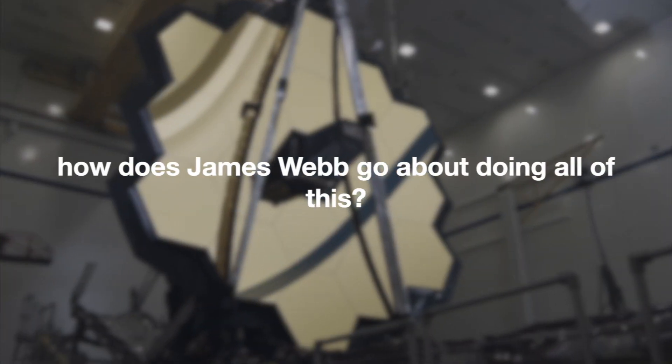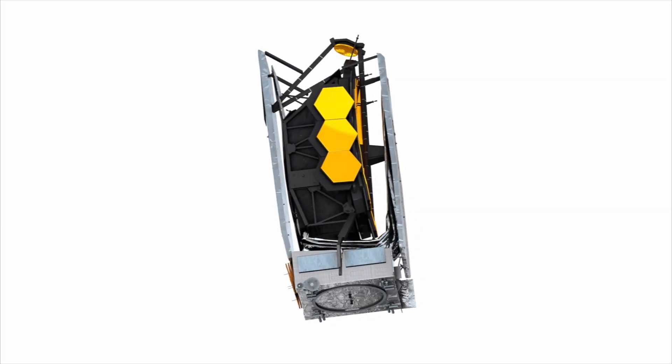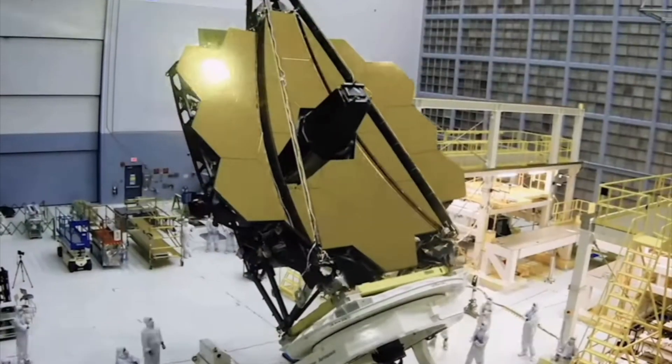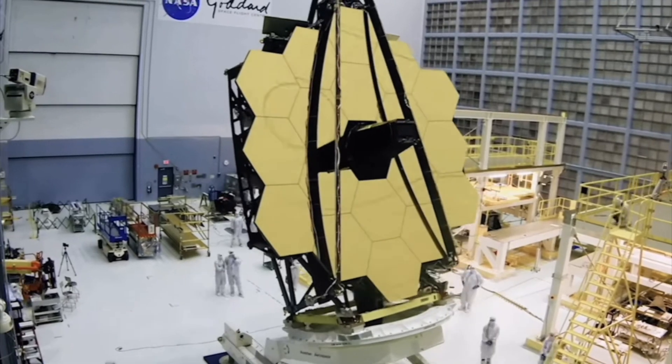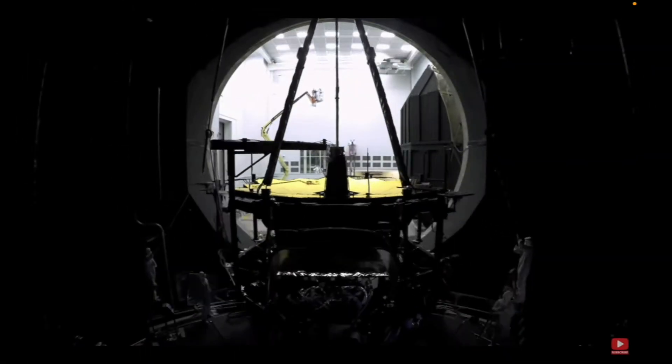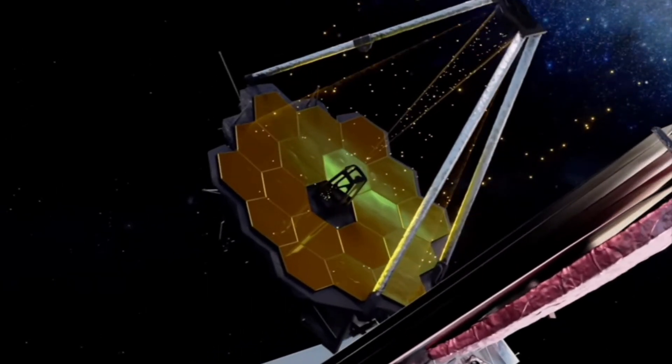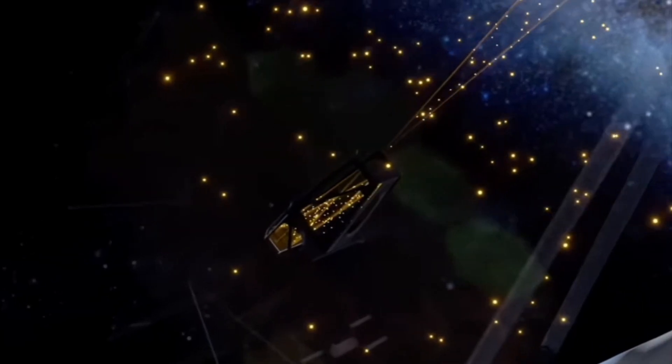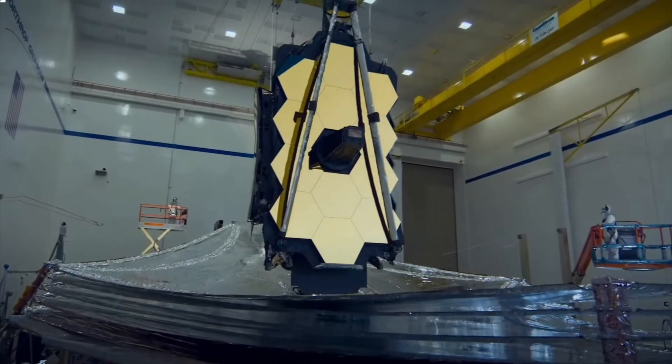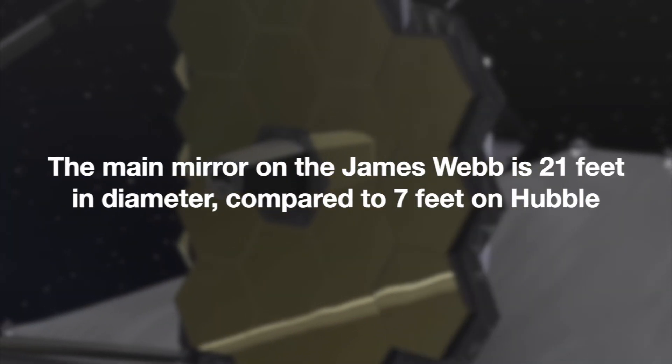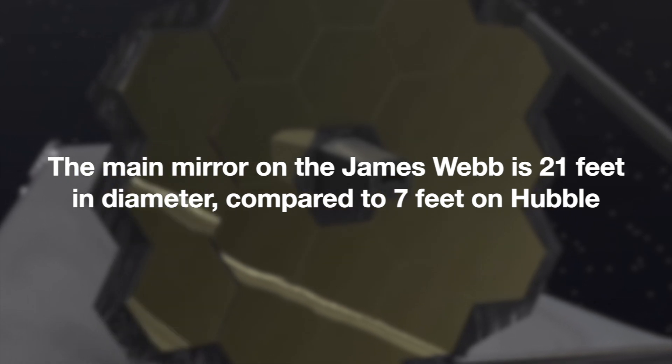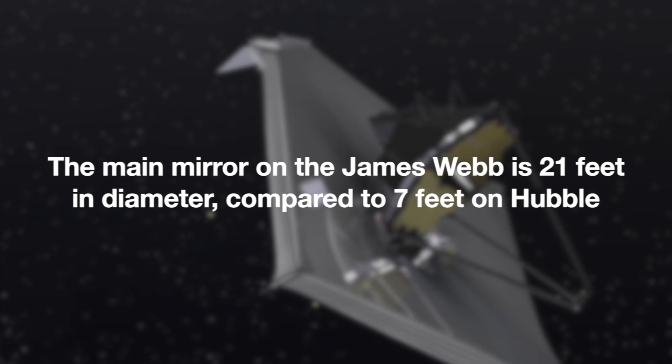So how does James Webb go about doing all of this? Well, it all boils down to what NASA thinks to be their secret weapon, as well as massive mirrors that are difficult to grasp. The mirrors on the James Webb telescope are unlike anything you've ever seen, and one that can take us to the farthest regions of the universe. The Hubble and Webb telescopes are both Cassegrain reflective telescopes, which collect light with the main mirror and focus it on a secondary mirror, which then focuses the light on sensors to form an image. This isn't the kind of bathroom mirror you'd find. A larger main mirror is required for a more powerful telescope. The main mirror on the James Webb is 21 feet in diameter, compared to 7 feet on Hubble. One of the reasons astronomers are ecstatic about it is because of this.